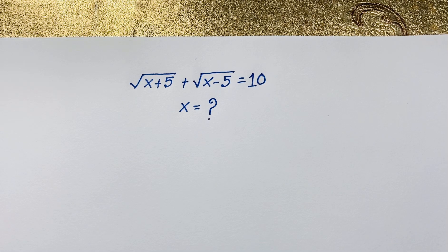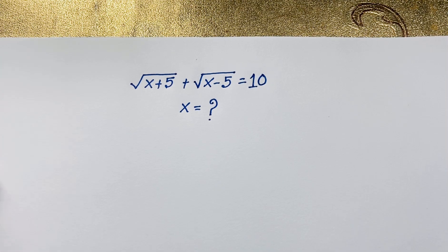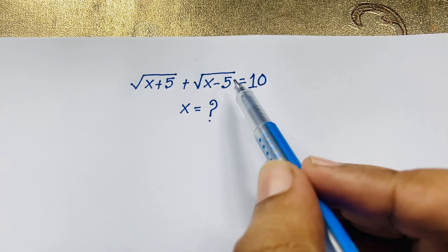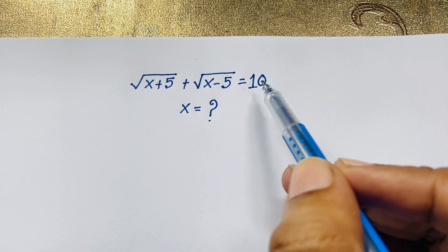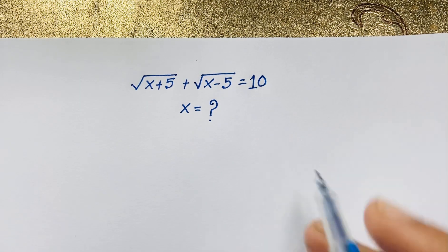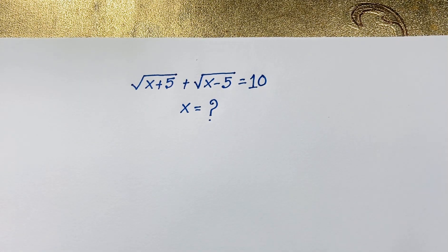Hello everyone, welcome to Rasha's Classroom. Today we have solved an interesting radical maths Olympiad question: square root of (x plus 5) plus square root of (x minus 5) is equal to 10. x is equal to what? How to simplify for x in this radical maths question?